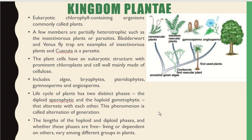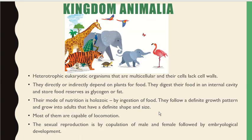The life cycle of plants has two distinct phases: the sporophytic (diploid) phase and the haploid gametophytic phase, which alternate with each other. This is called alternation of generation. The length of haploid and diploid phases, and whether these phases are free-living or dependent on others, varies among different groups of plants.